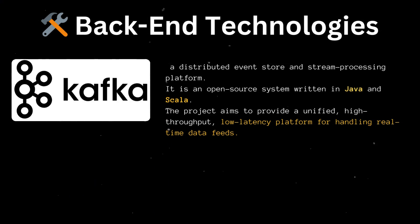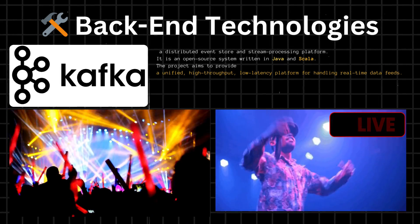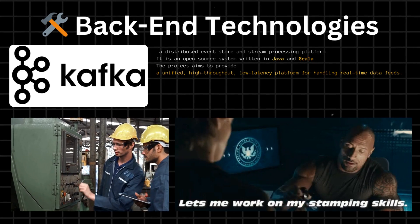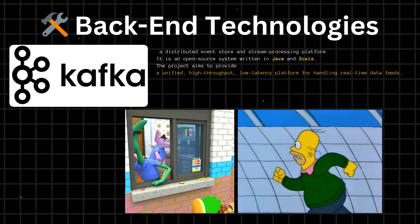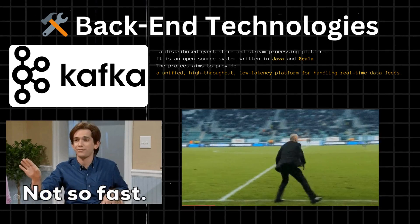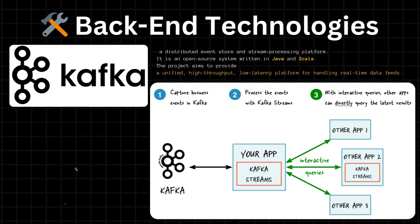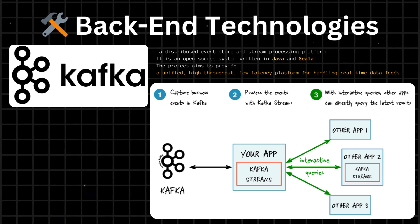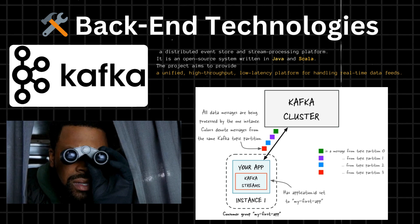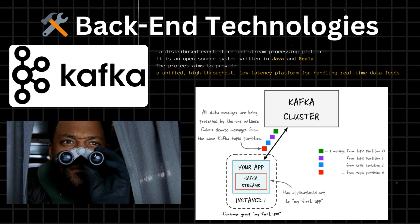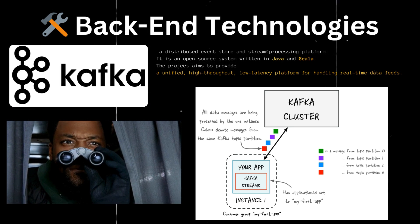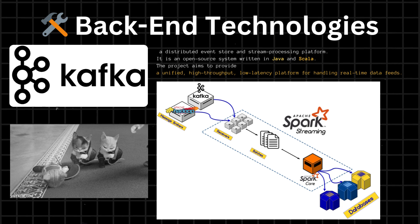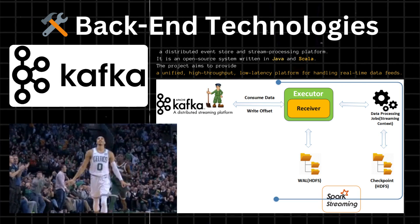Kafka. Spotify uses Kafka to handle data streaming and real-time event processing in its back-end systems. Kafka allows Spotify to process large amounts of data in real time, essential for providing users with a seamless listening experience. With Kafka, Spotify can handle streaming data from various sources such as user actions, music playback events, and social interactions. Kafka also provides a reliable and fault-tolerant platform for processing and analyzing data. Additionally, Kafka's ability to integrate with other tools like Hadoop and Spark allows Spotify to analyze and process data in various ways quickly.